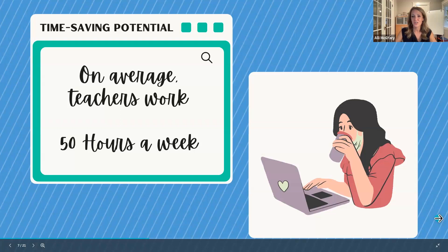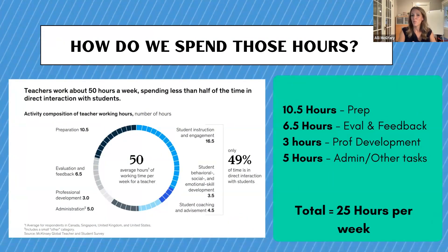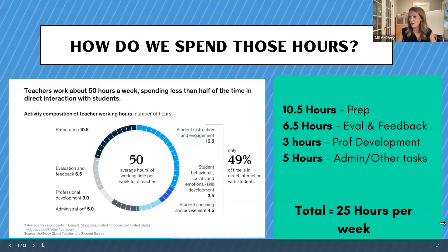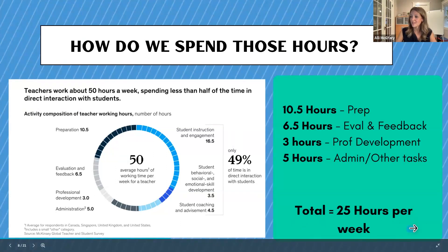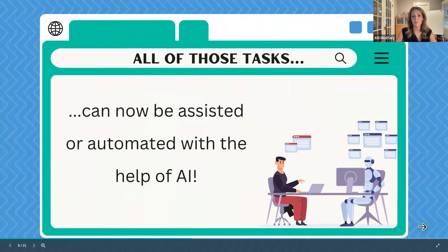Just a quick example: on average, a teacher works about 50 hours per week. When we look at how we break down those 50 hours — some teachers were surveyed for this article, I believe published in EdWeek — this is how they broke down a typical week: 10 and a half hours of prep, things like lesson planning and activity planning; 6 and a half hours of evaluation and feedback; 3 hours of professional development; and 5 hours of administrative tasks — things like team meetings, department meetings, sending a newsletter or an email to a parent. All told, that is 25 hours of our 50 hours a week that we are non-student-facing.